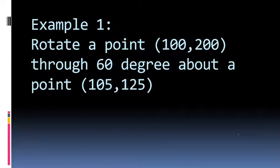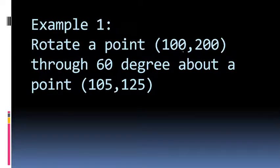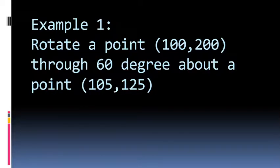Let's take an example for a deeper look. We rotate a point (100, 200) through 60 degrees about a given pivot point (105, 125). So h = 105, k = 125, theta = 60°, x = 100, and y = 200.